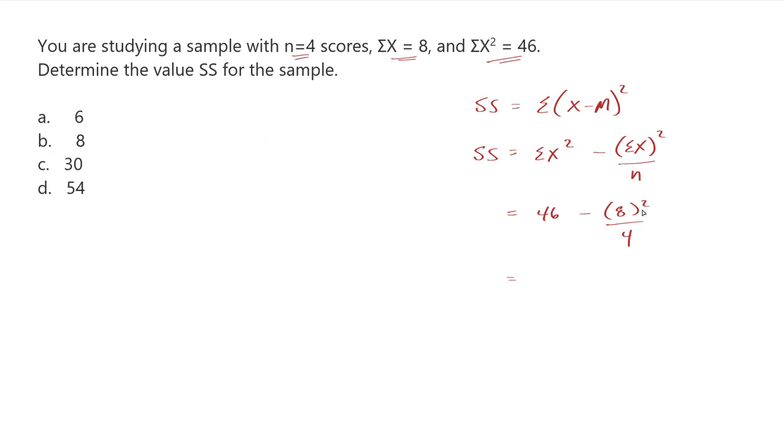Okay, so 8 squared is 64. Divided by 4 is 16. 64 divided by 4 is 16. So this is going to be 46 minus 16, which equals 30, making our answer C, 30.